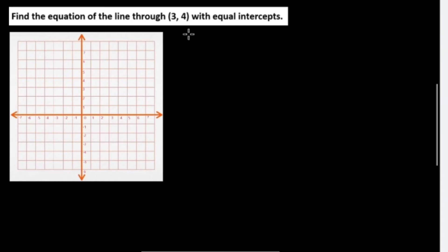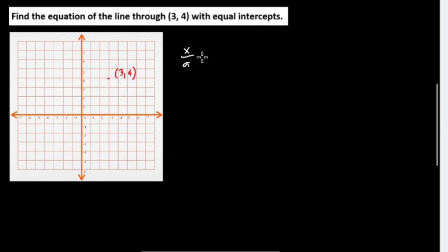Example: Find the equation of the line through the point (3, 4) with equal intercepts. The point is (3, 4) — positive 3 for X and positive 4 for Y. Using the intercept form equation: X over A plus Y over B equals 1.